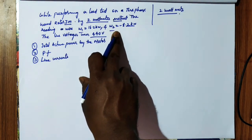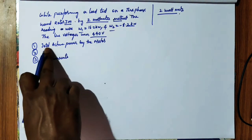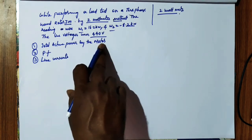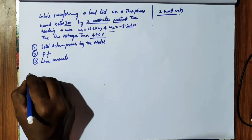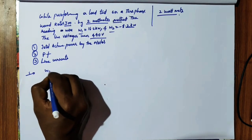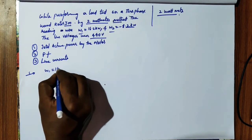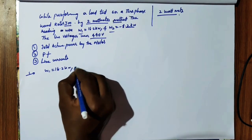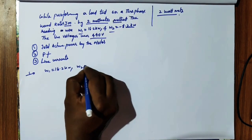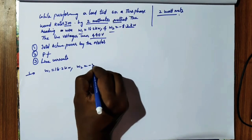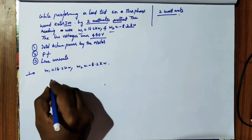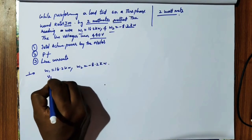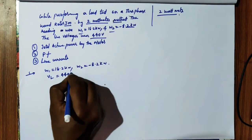The question asks to find the total active power consumed by the motor. The given values are: W1 = 16.2 kilowatts, W2 = -8.2 kilowatts, and the line voltage VL = 440 volts.